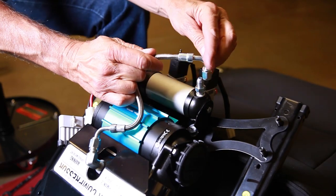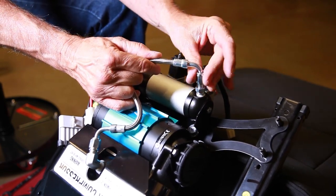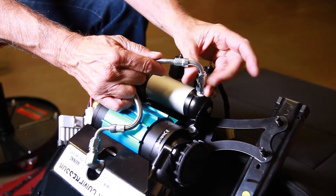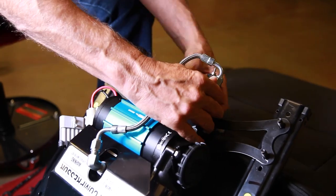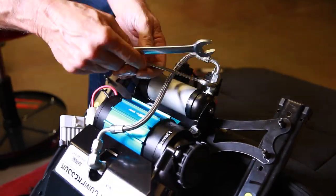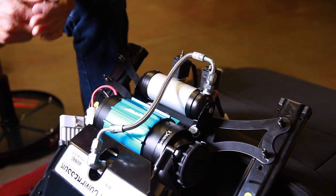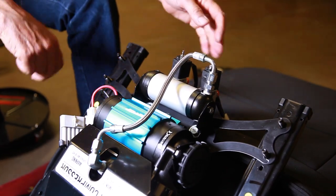Attach the pressure line and position it so that the line isn't rubbing anywhere and so that there are no kinks. Just be careful. Final tighten those fittings using a couple of 14 millimeter end wrenches. Snug is good. Just don't get overzealous and break things.